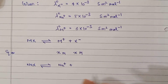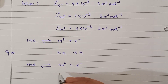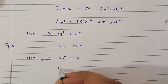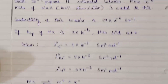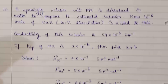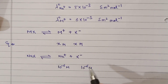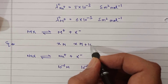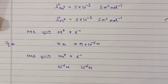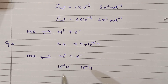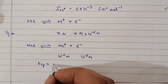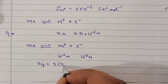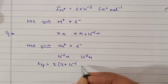Since NaX dissociates 100%, at equilibrium we get 10⁻⁶ molar Na⁺ and 10⁻⁶ molar X⁻ from NaX. MX exists in equilibrium as M⁺ and X⁻; let the concentration of M⁺ be X molar at equilibrium. By simultaneous equilibrium, the total X⁻ concentration is X + 10⁻⁶ molar. Therefore, KSP of MX = [M⁺][X⁻] = X × (X + 10⁻⁶). This is equation 1.